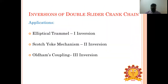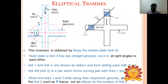In the inversion of the double slider crank chain mechanism, there are three inversions: first inversion — elliptical trammel; second inversion — Scotch yoke mechanism; third inversion — Oldham's coupling. The elliptical trammel is an instrument used to draw an ellipse; it has two sliders — one in the horizontal direction and another in the vertical direction.